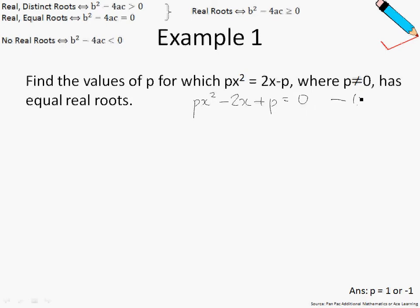Let's call this equation number 1. If the question wants equal and real roots, then we are in the scenario of the second case. Look at the top left-hand corner of the screen — you'll see that for real and equal roots, the discriminant is equal to 0.